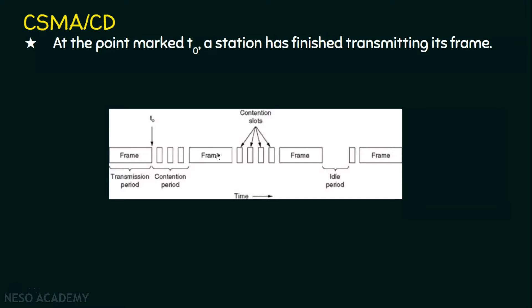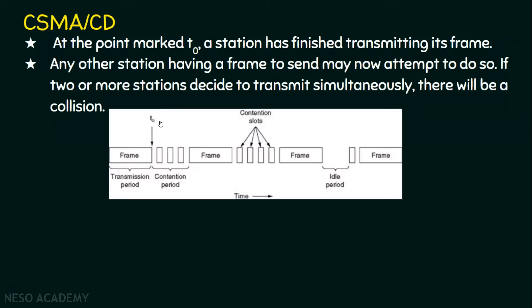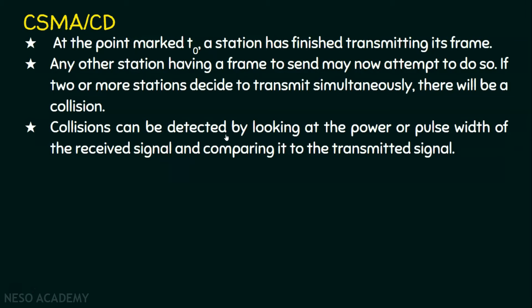Between successful frame transmissions, there will be a contention period and some idle periods. Any station having a frame to send may now attempt to do so since the channel is free. If two or more stations decide to transmit simultaneously, there will be a collision. Collisions can be detected by comparing the power or pulse width of the received signal with the transmitted signal — if they differ, collision is detected.